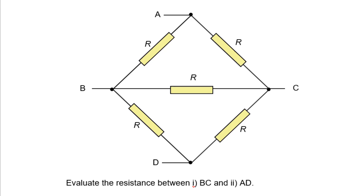Hello, how are you? I have an exam puzzle for you. We have five identical resistors connected in this manner. So what is the effective resistance between points B and C and between points A and D?